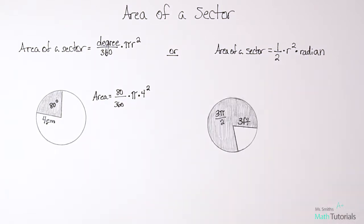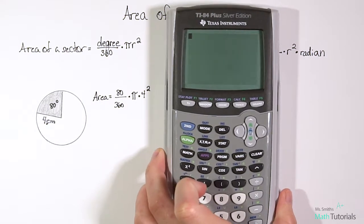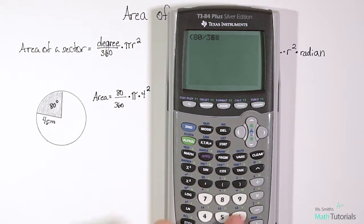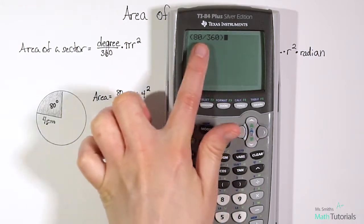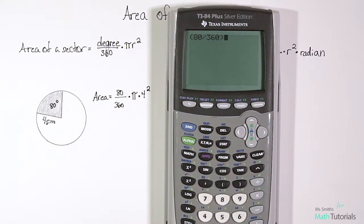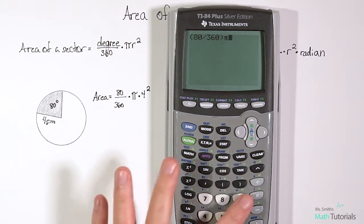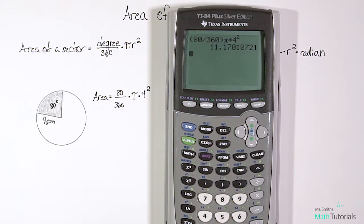And then what's great is you can just type that straight into the calculator. So if you bring out your calculator, and we type in parentheses 80 divided by 360, and that tells your calculator it's a fraction you've got, times pi times 4 squared. And that leaves us with 11 point and then a really long decimal. So let's just round this to the nearest hundredth. So that would be 11.17.